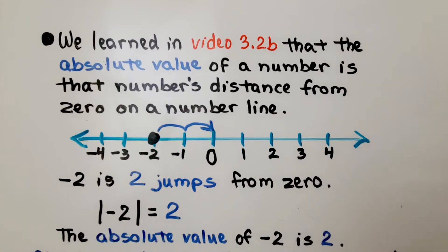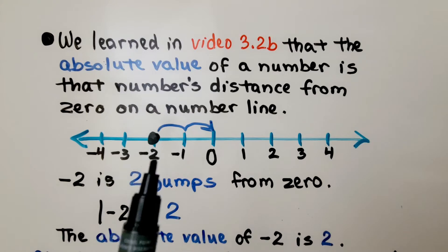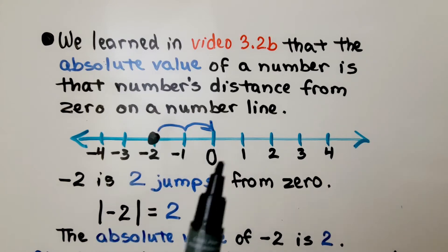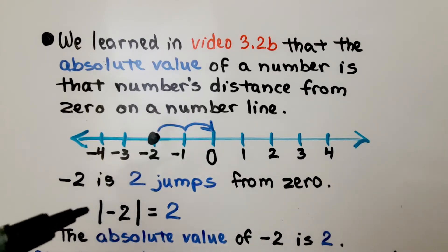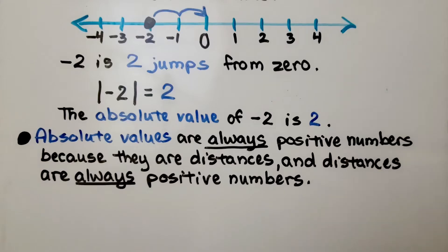We learned in video 3.2b that the absolute value of a number is that number's distance from zero on a number line. Negative two is two jumps from zero, so the absolute value of negative two is two. Absolute values are always positive numbers because they're distances, and distances are always positive numbers.